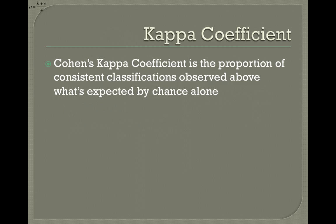Another coefficient we run into is a kappa coefficient. Cohen's kappa coefficient is really cool because it controls for what's expected by chance alone. It looks at the proportion of consistent classifications observed above what's expected by chance alone. It reminds me a lot of chi-square in that we look at observed and expected, but then in a sense it's completely different too. We look at the proportion of consistent classifications, but we control for the fact that some of this could have just been from random chance alone.